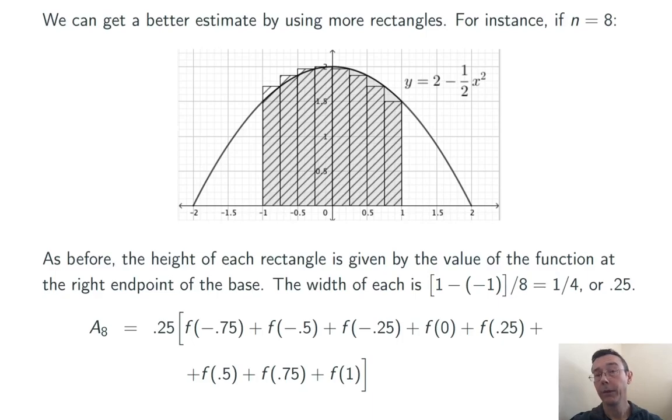Let's write down a formula for the total crosshatched area. It's going to be width times height plus width times height and so on. And the width is always the same, so I'm going to start now by factoring that out. I'm going to get 0.25, that's the width, times the sum of the values of the function at the right-hand endpoints of each of these little intervals: f of negative 0.75, f of negative 0.5, and so on. I plug in all those values, I simplify a little bit, and I get 3.656. This is a similar result as we got when n was 4, but this one should be more precise.